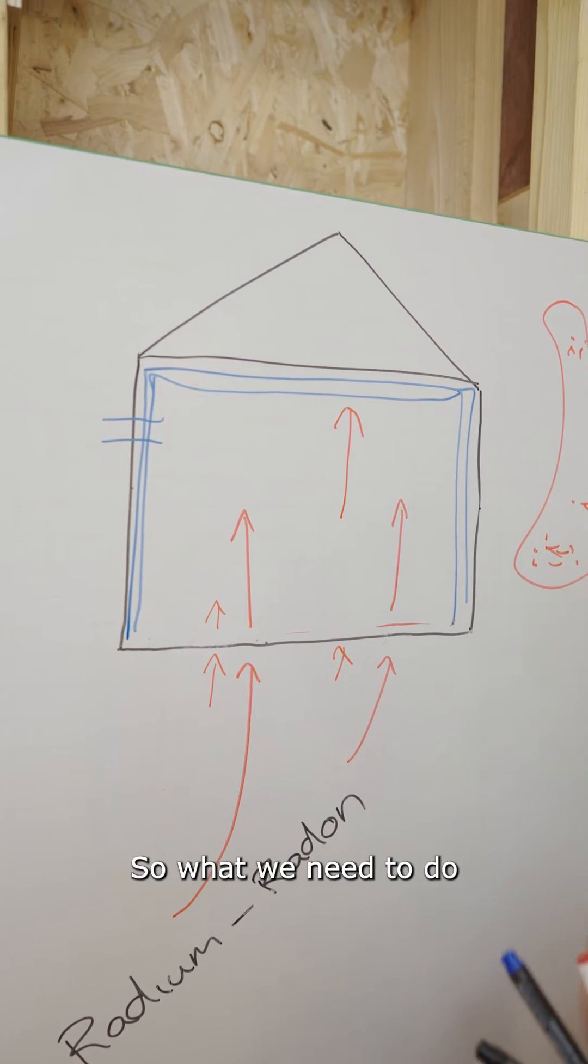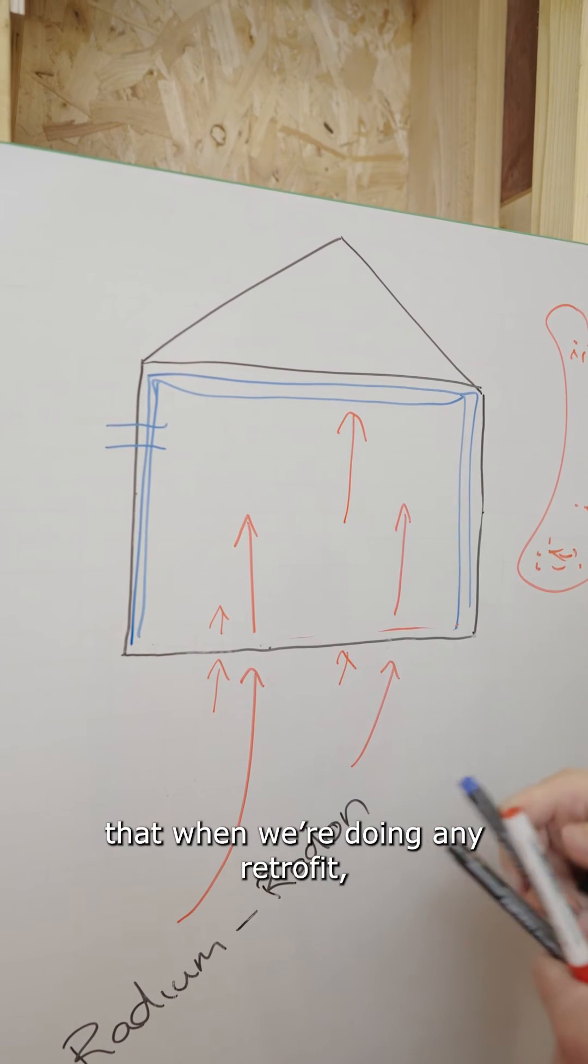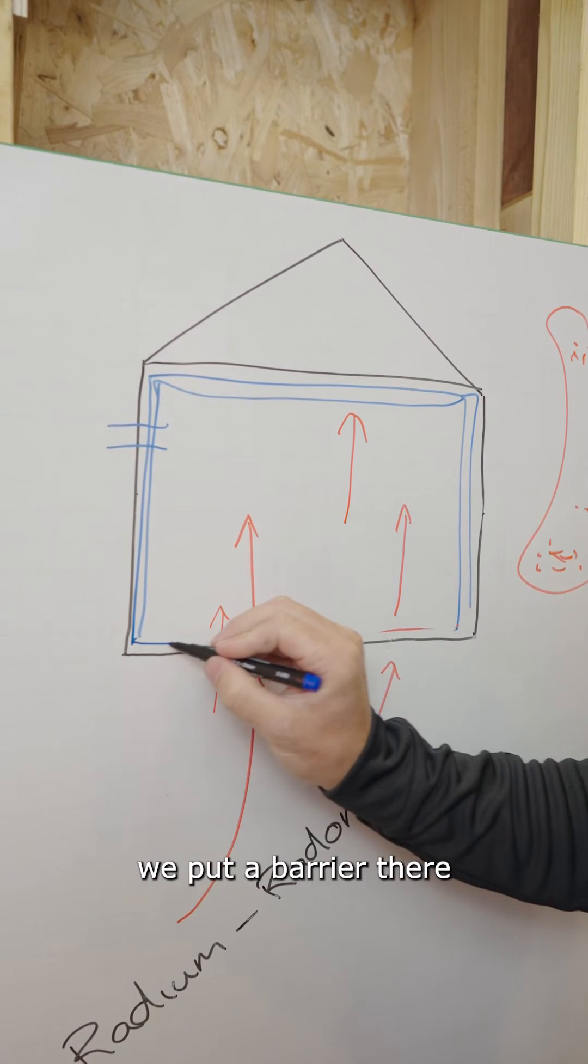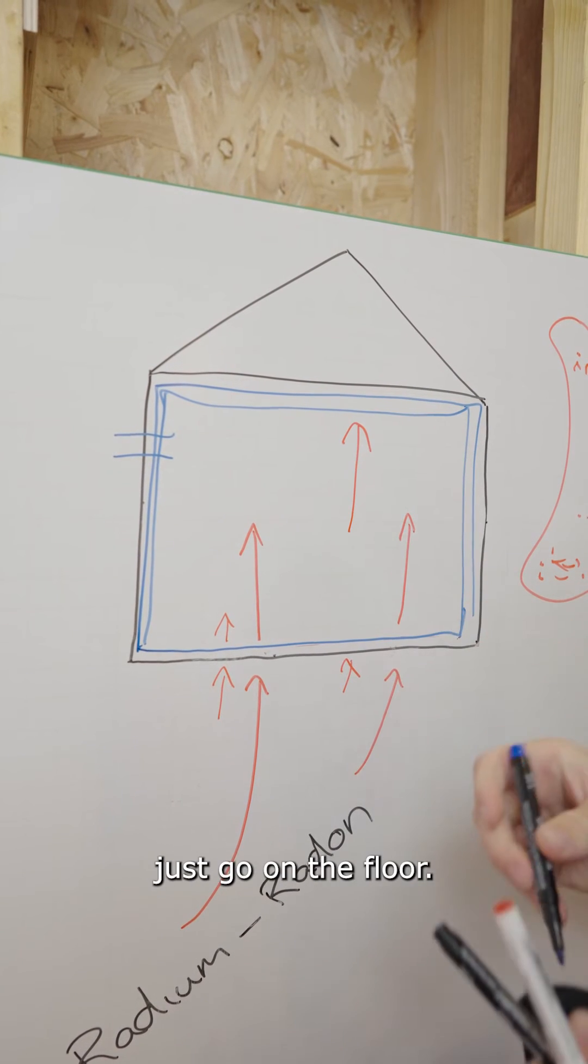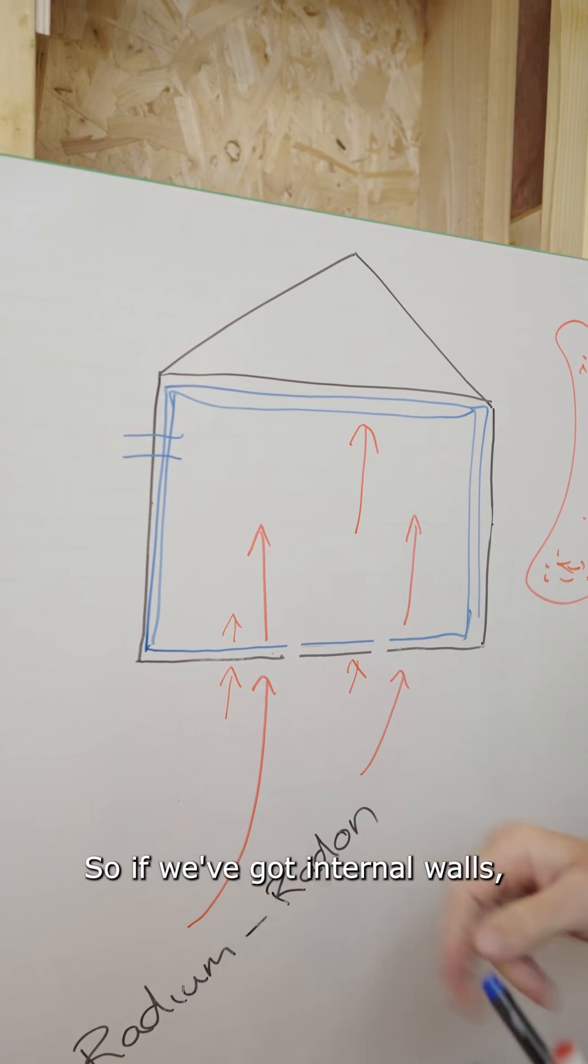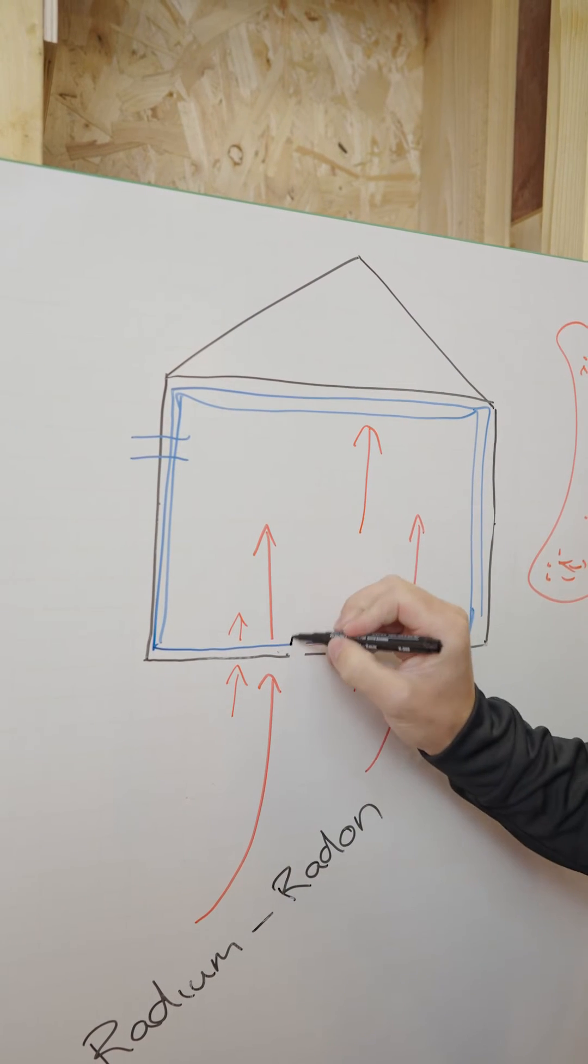So what we need to do is make sure that when we're doing any retrofit we put a barrier there and this doesn't just go on the floor. We've got internal walls. I've seen a lot of people do this recently.